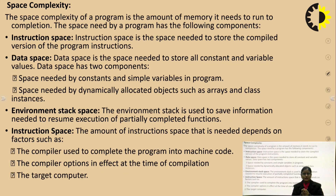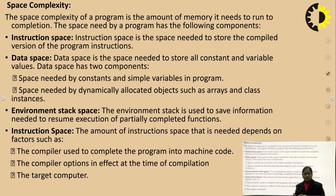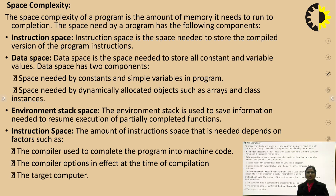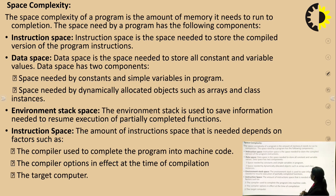Time complexity basically depends upon the number of inputs and how the size varies — which we determine using asymptotic notation, to be discussed further. Space complexity means the space needed in memory. The space complexity of a program is the amount of memory it needs to run to completion.